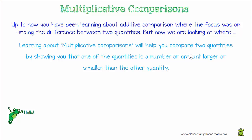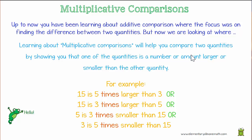Let's look at an example. We can see that 15 is 5 times larger than 3, or we can say that 15 is 3 times larger than 5. We can swap the numbers around and say that 5 is 3 times smaller than 15, or that 3 is 5 times smaller than 15.